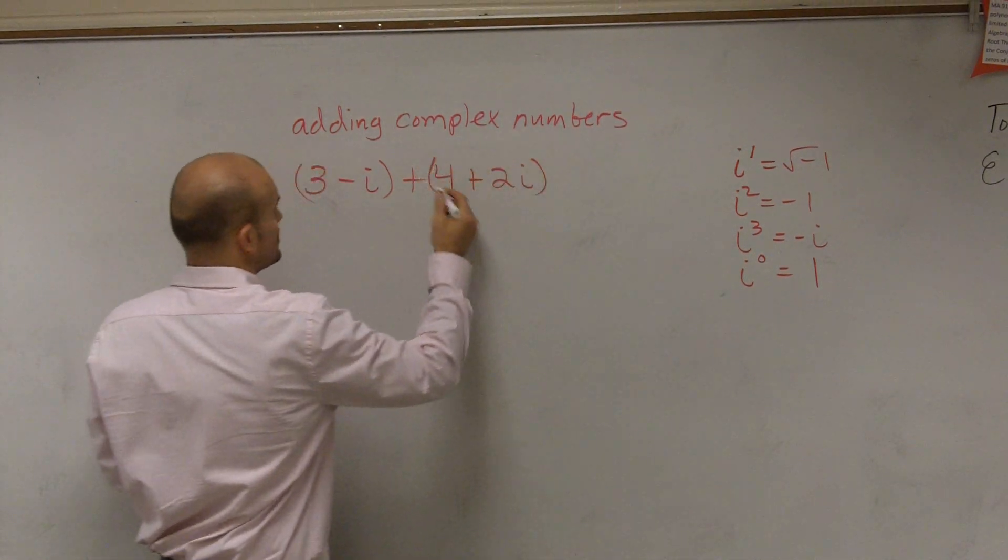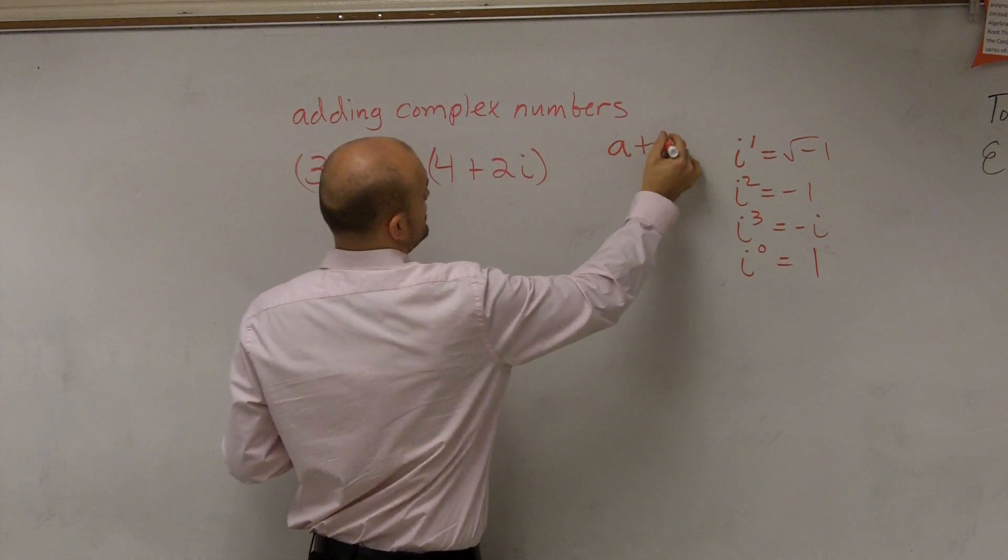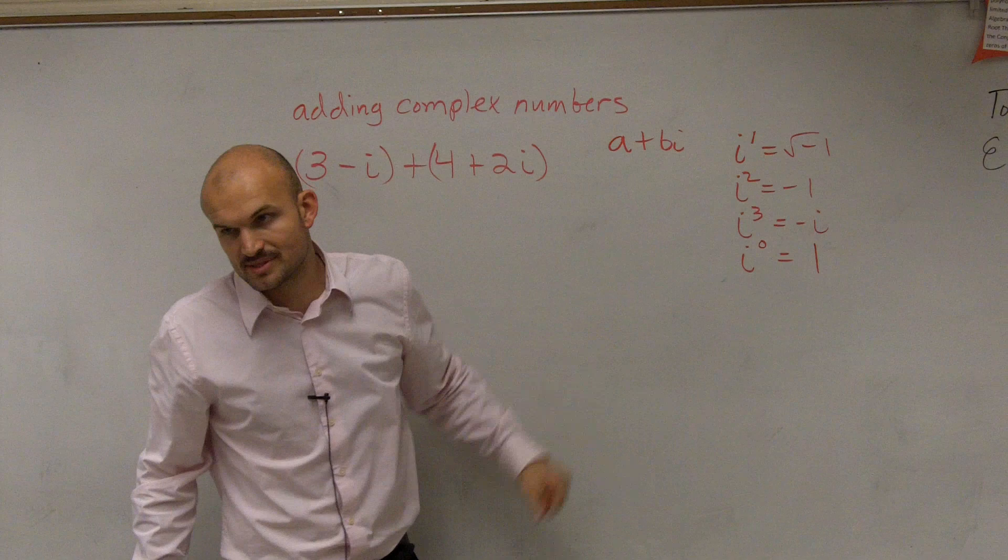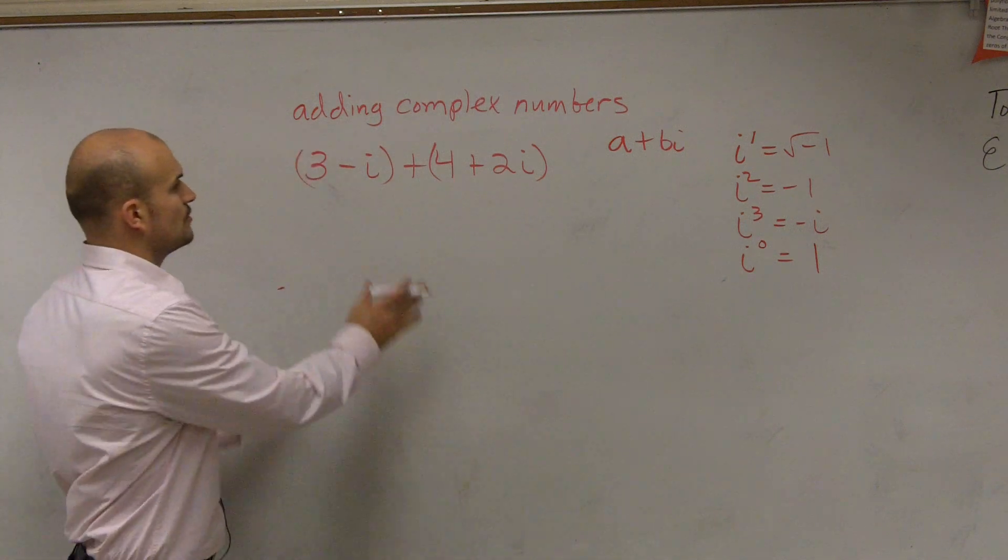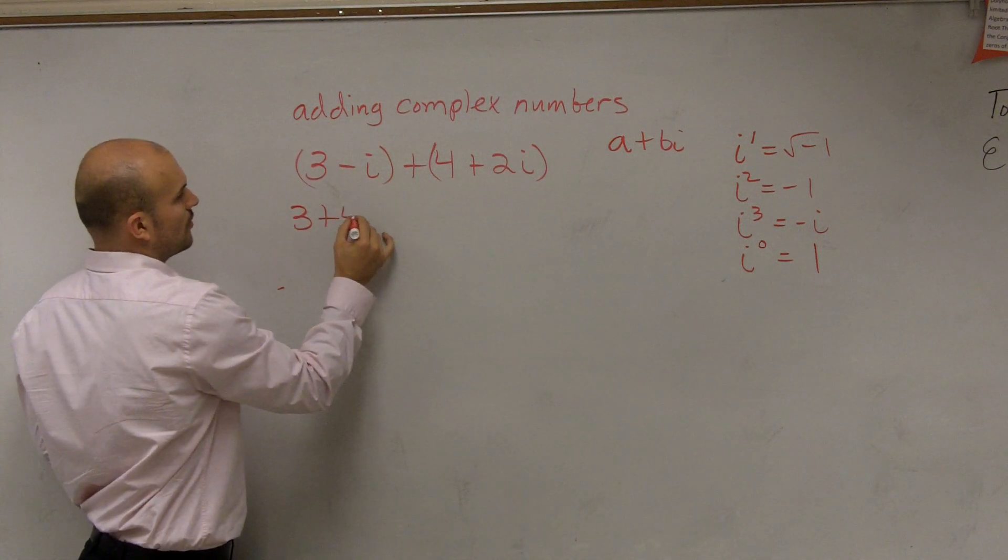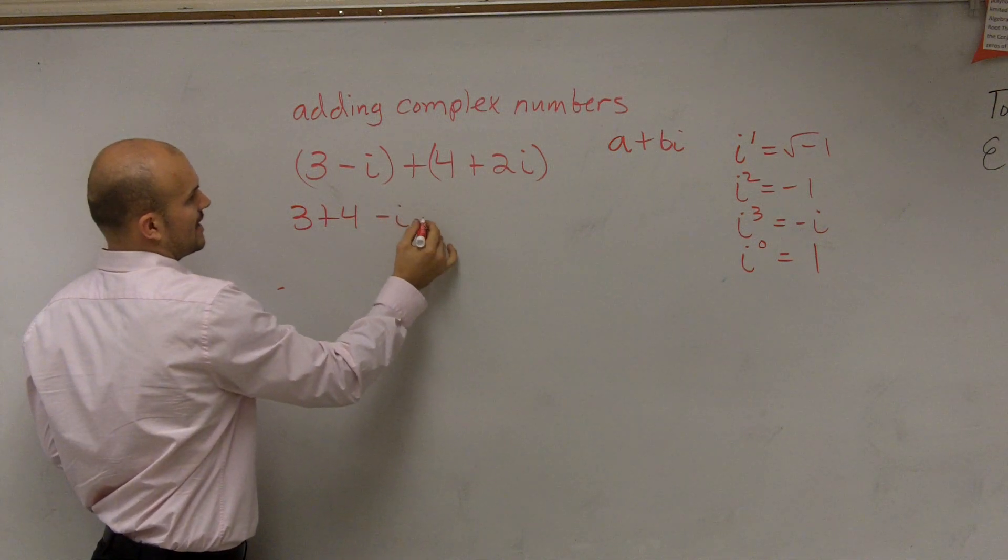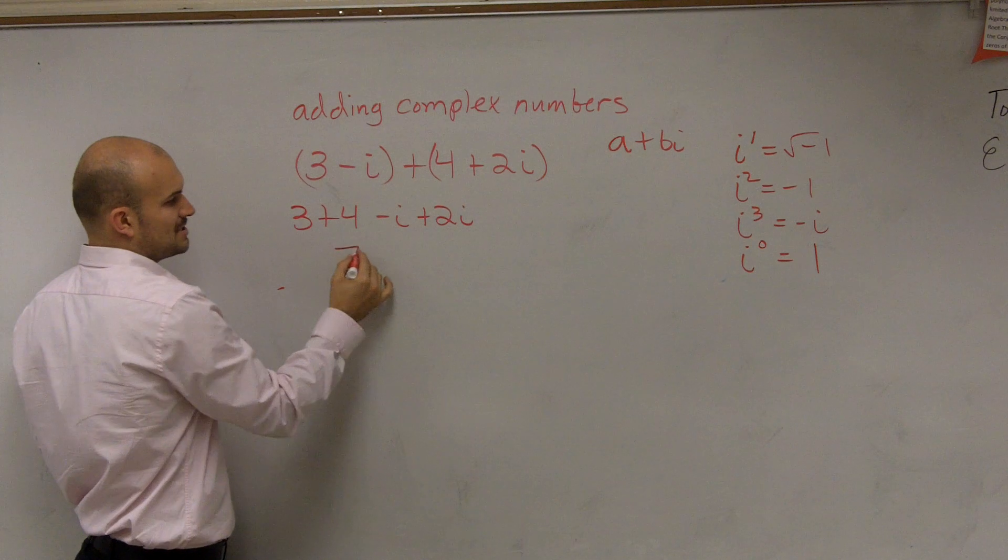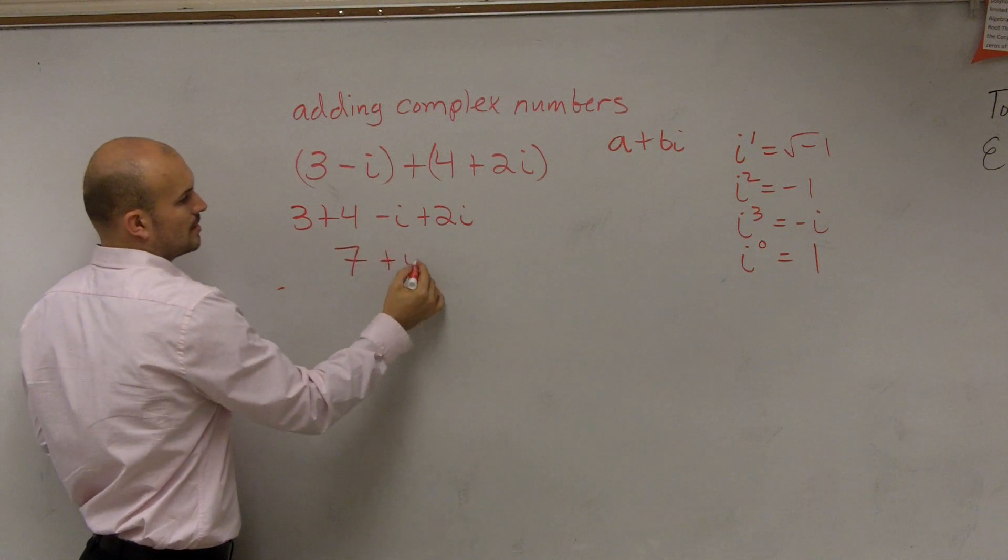And remember, in complex number system, we have a plus bi, where a represents your real number and bi represents your imaginary number. So what I'm simply going to do is just do 3 plus 4, and then negative i plus 2i. So therefore, my final answer is 7 plus i.